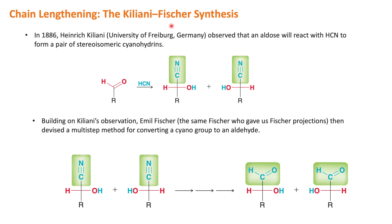In Kiliani-Fischer synthesis, in 1886 Heinrich Kiliani observed that when he treated an aldose with hydrogen cyanide, he was getting a pair of stereoisomeric cyanohydrins. Building on Kiliani's observation, Emil Fischer performed a multi-step synthesis for conversion of cyanohydrins into an aldehyde group. This cyanohydrin was synthesized by Kiliani, and Fischer converted it into an aldehyde group through a multi-step process.